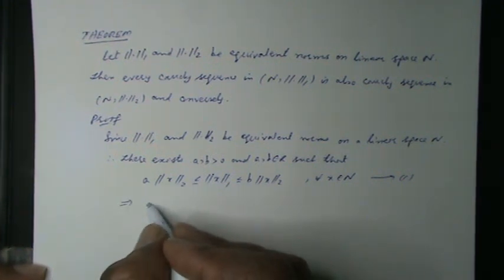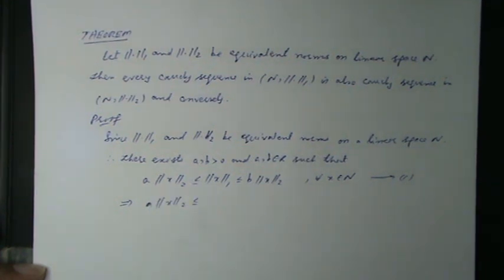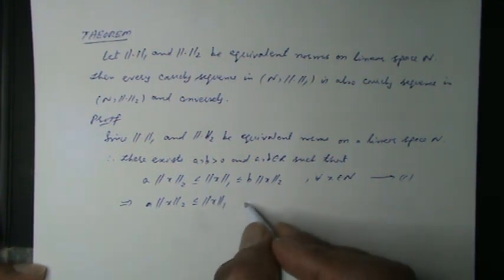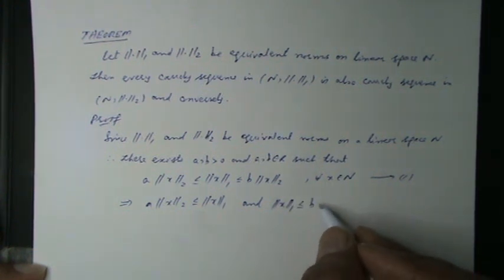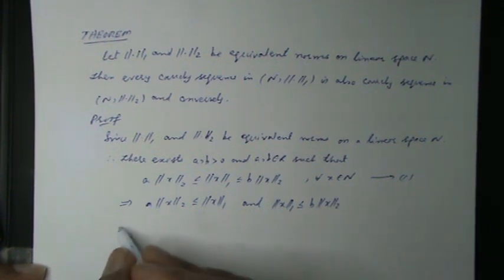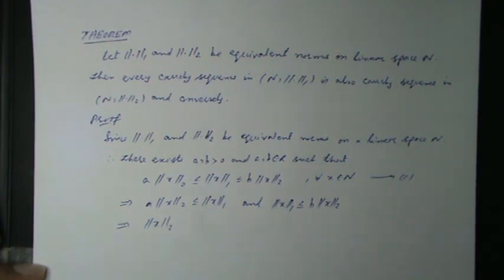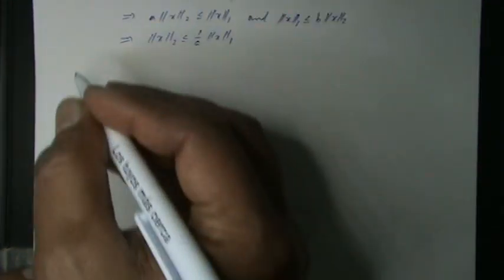Inequality 1 can be written as: a times ‖x‖₂ ≤ ‖x‖₁, and ‖x‖₁ ≤ b times ‖x‖₂. The first part can be rewritten directly as ‖x‖₂ ≤ (1/a) times ‖x‖₁.